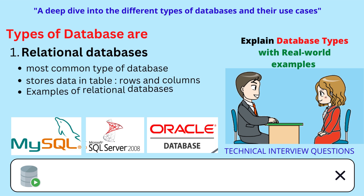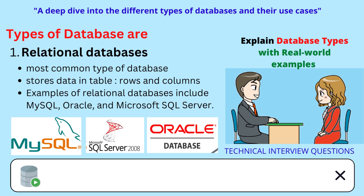Explain database types with real-world examples. Relational databases are the most common type of database, and they store data in tables with rows and columns. The tables are related to each other through common fields, and data can be easily queried and manipulated using SQL, Structured Query Language.